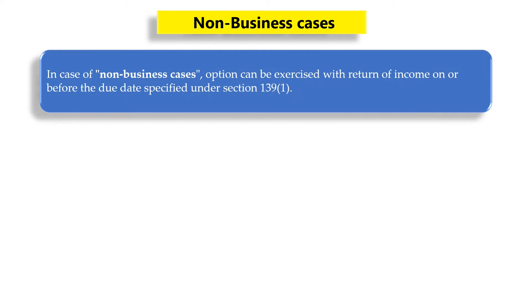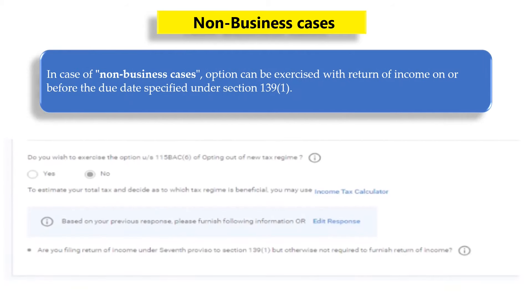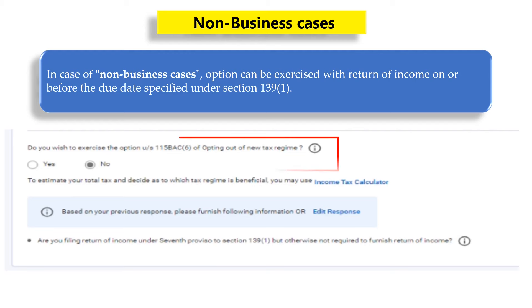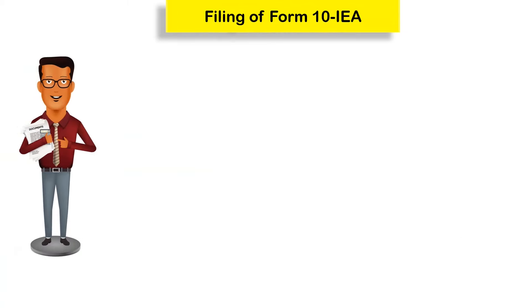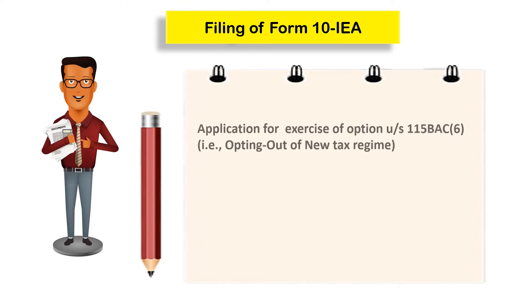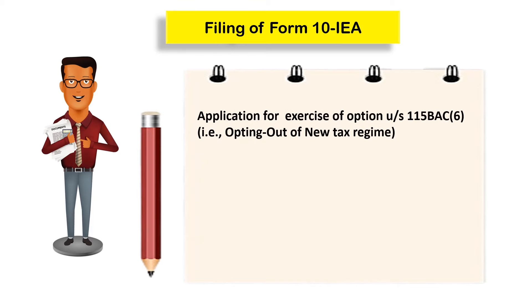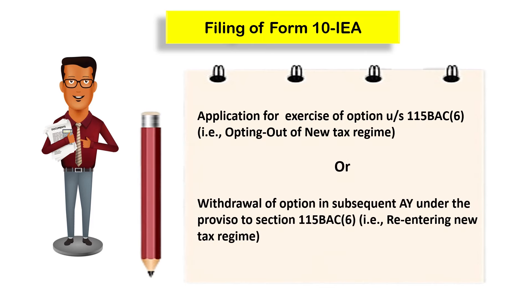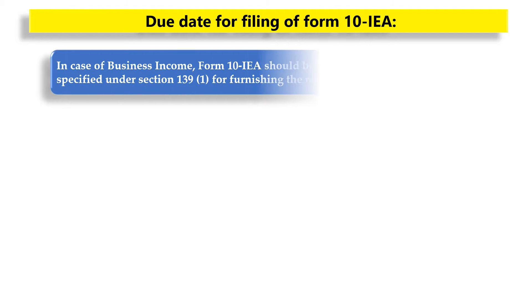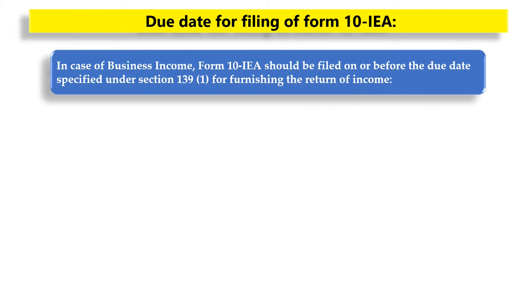In non-business cases, you can exercise your option with the return of income on or before the due date. Form 10-IEA is applicable both for exercising the option of opting out of the new tax regime and for withdrawal of the option in any subsequent assessment year under the proviso to Section 115BAC(6), that is, re-entering into the new tax regime. In case of business income, Form 10-IEA should be filed on or before the due date specified under Section 139(1).